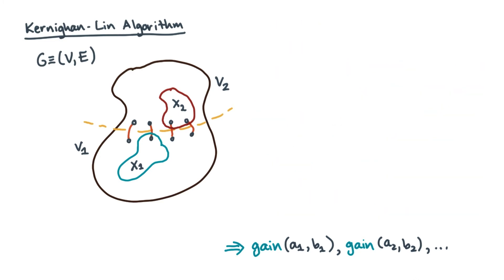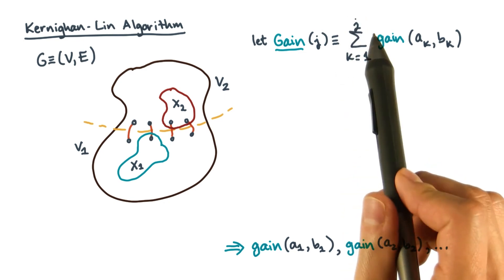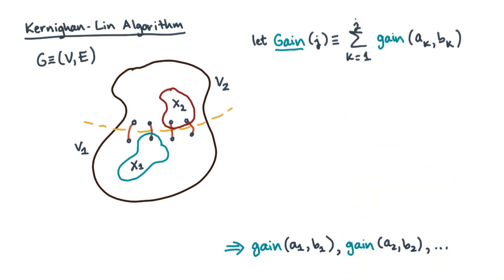Let's define something called the cumulative gain. That's gain with a capital G. The capital G gain is the sum of all the little gains up to a certain point, j. Kernighan's and Lin's idea was to keep all the swaps that maximize the cumulative gain.